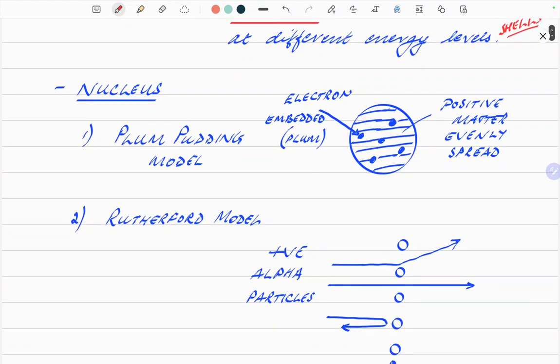But the history of it was, at the beginning when scientists first talked about atoms and particles, they thought it was something like a plum pudding model. Basically, the atom was considered to be positive matter, evenly spread. A solid positive lump, if you like, where the electrons were actually embedded in the solid matter.